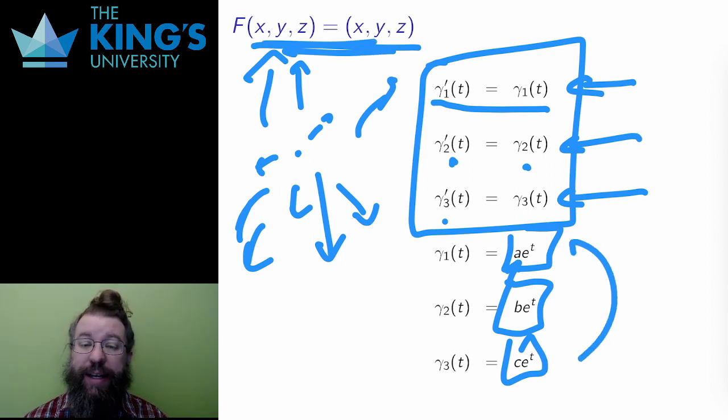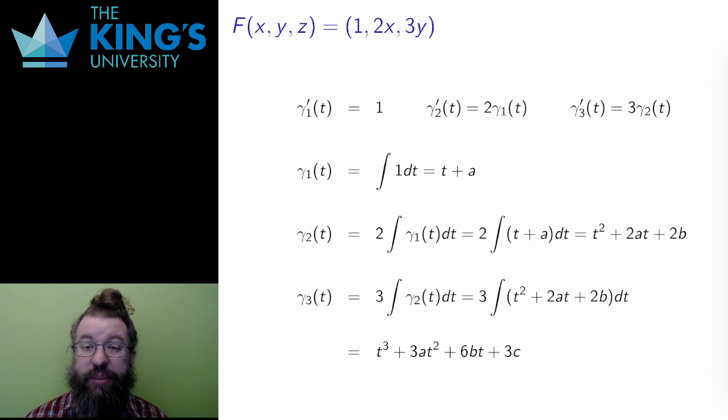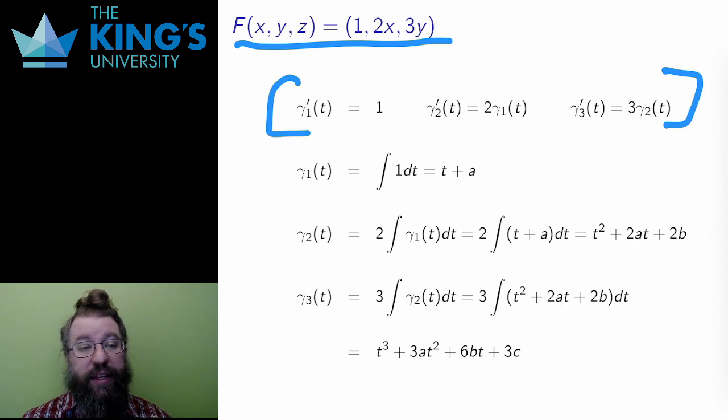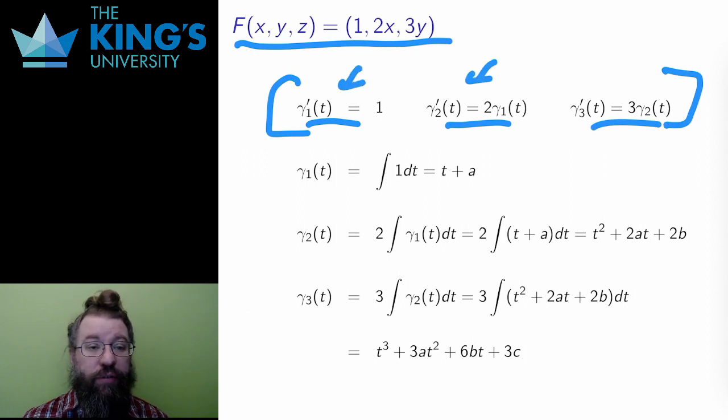Finally, here is one last example. Here, the system of DEs is still interconnected, but it is approachable in sequence. If the field is f of (x,y,z) equals (1, 2x, 3y), I translate this into the differential equation for the integral curves. I get that γ₁' is equal to 1, γ₂' is equal to 2x, and γ₃' is equal to 3y.